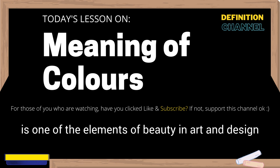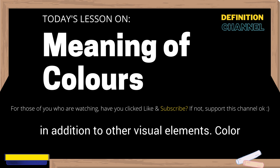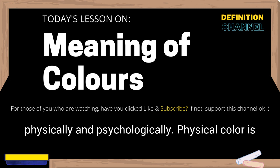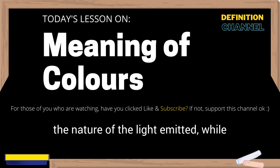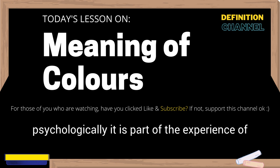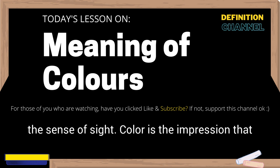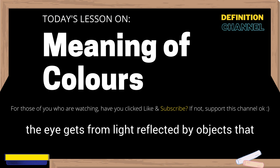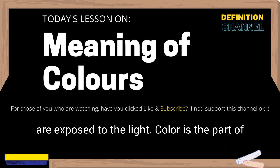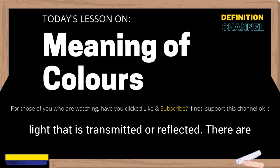Color is one of the elements of beauty in art and design, in addition to other visual elements. Color can be understood physically and psychologically. Physical color is the nature of the light emitted, while psychologically it is part of the experience of the sense of sight. Color is the impression that the eye gets from light reflected by objects that are exposed to the light. Color is the part of light that is transmitted or reflected.